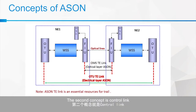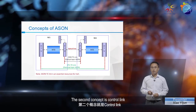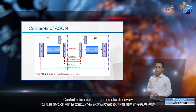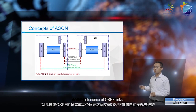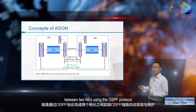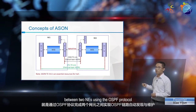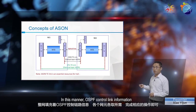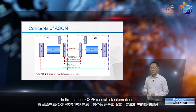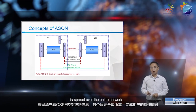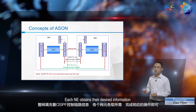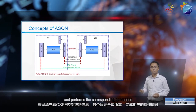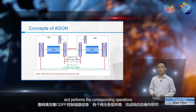The second concept is control link. Control links implement automatic discovery and maintenance of OSPF links between two NEs using the OSPF protocol. In this manner, OSPF control link information is spread over the entire network. Each NE obtains their desired information and performs the corresponding operations.